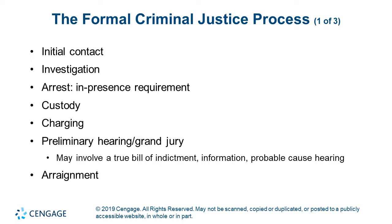Let's talk about the formal criminal justice process. There's an initial contact — usually with law enforcement. Someone calls 911 and police respond, or police observe a crime on patrol. Maybe they're working with an informant who tells them of criminal activity — drug activity, illegal weapons storage. A political figure might initiate an investigation into a criminal enterprise, or a person might just walk into a police station and confess, overcome with guilt.